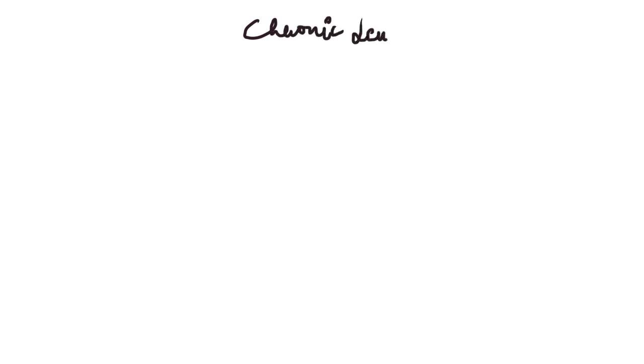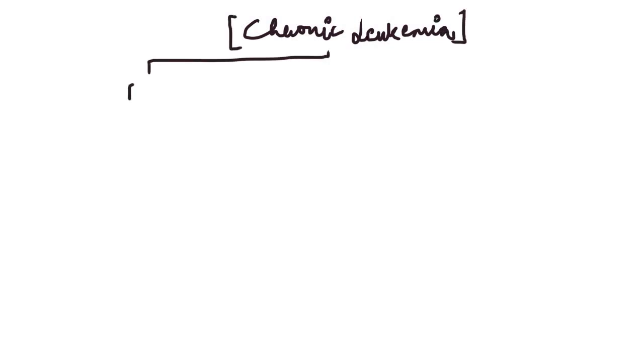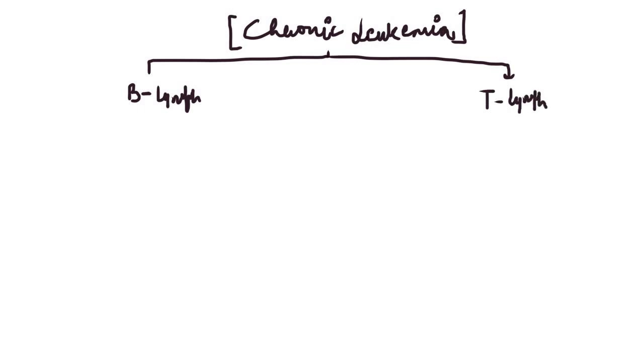In the previous videos, we have discussed the chronic leukemias which arise from the B-cell. As I told you, the chronic leukemias are the neoplastic proliferation of the mature lymphocytes. The lymphocytes are of two types: the B-lymphocytes and the T-lymphocytes. So the chronic leukemias may arise from the B-lymphocyte as well as from the T-lymphocytes.